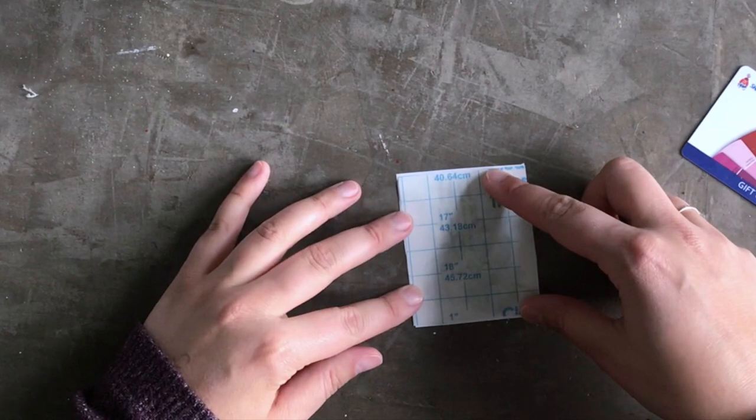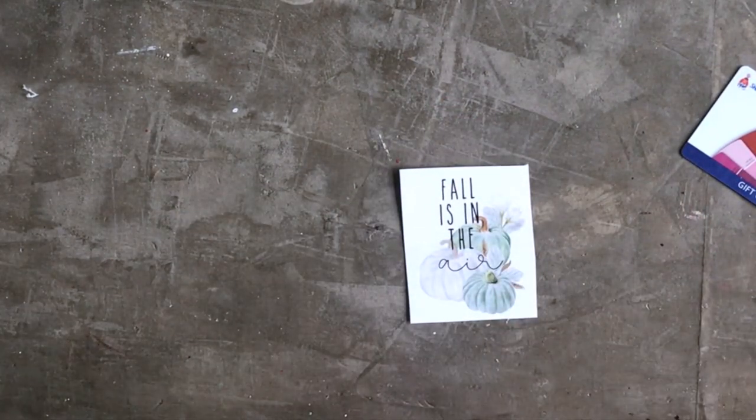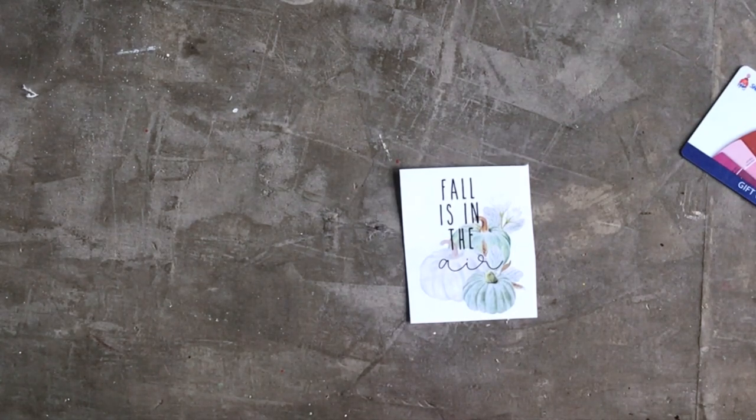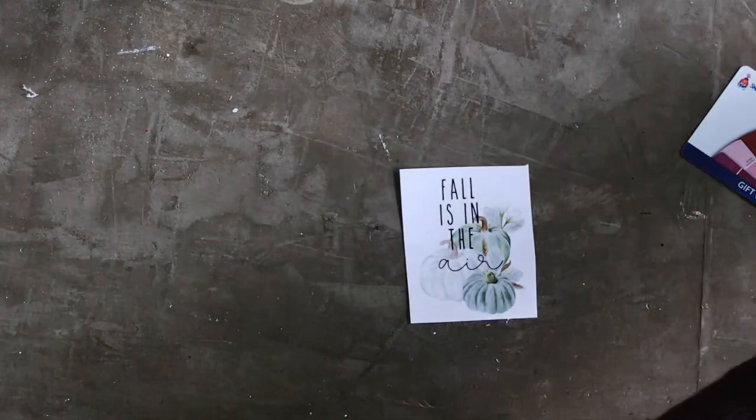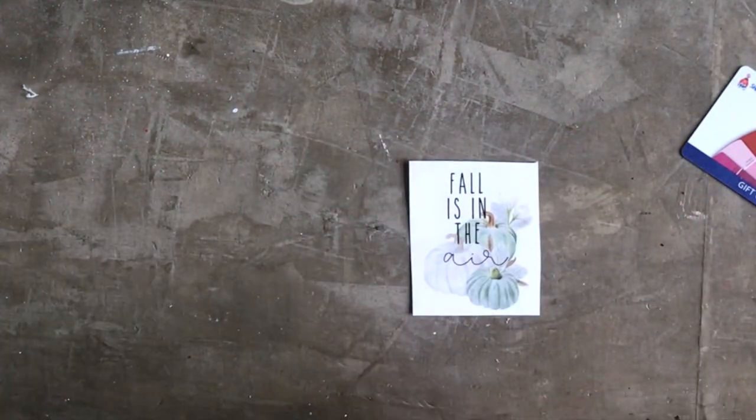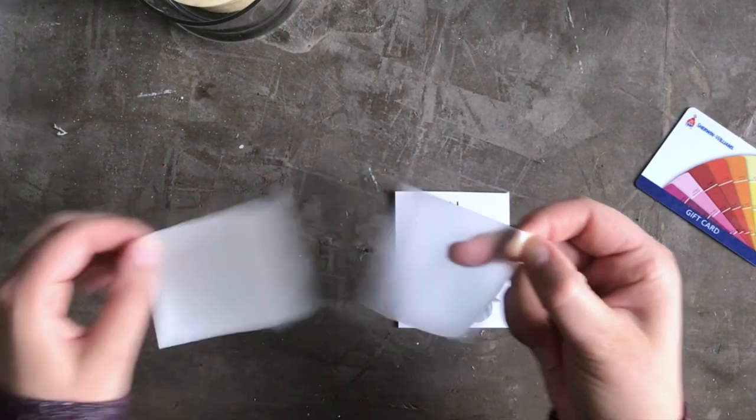Now you'll notice I did not mirror this image or the text. In other image transfer projects, you're going to want to mirror them. In this one you're not, and you're going to see why as this goes along. So you're just going to take your little square of contact paper. This is almost like the hardest part, is getting that first corner to peel away.